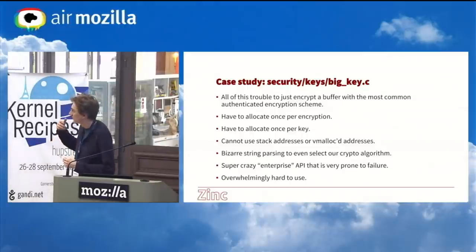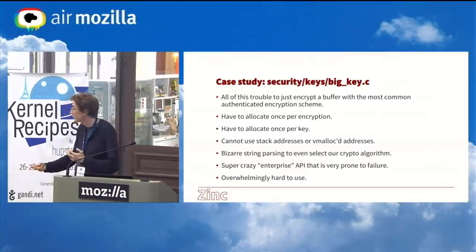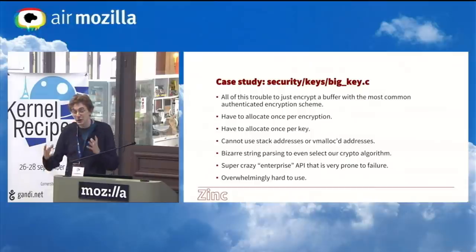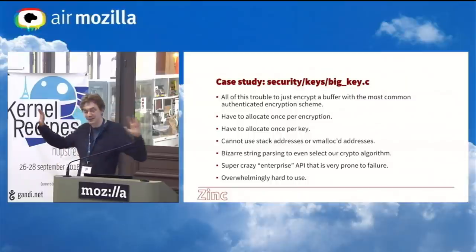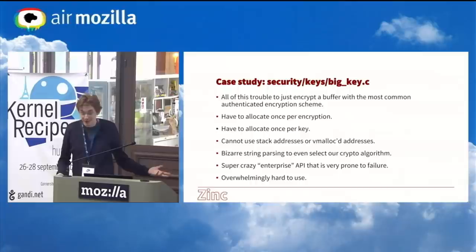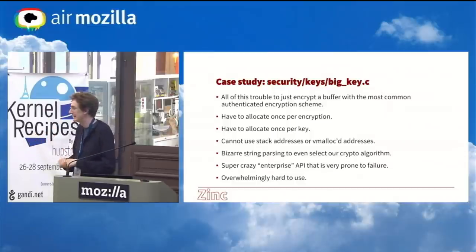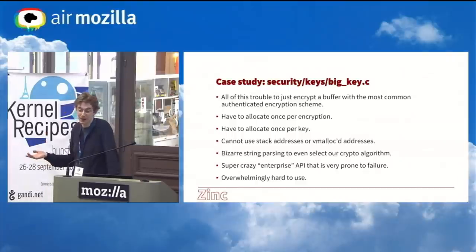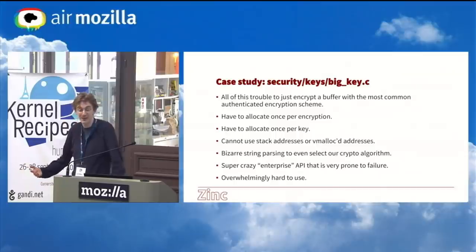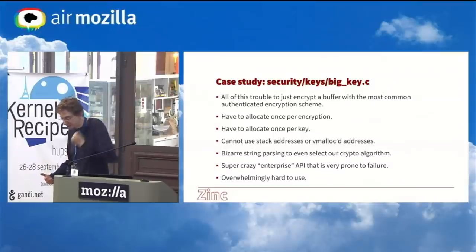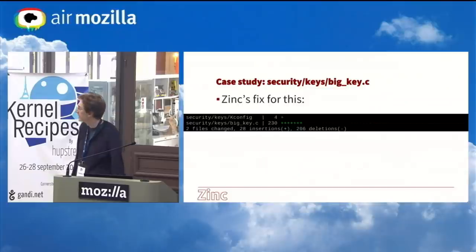Just to recap what's required with the current API: you have to allocate once per encryption, allocate once per key or take mutexes, you can't use stack addresses, you can't use vmalloc addresses, there's a bizarre string parsing situation, you even choose which algorithm you're going to have. The whole thing is this enterprise API, developed by smart people but not appealing to use. Importantly, it's hard to use, which means when people try and use it, oftentimes they get it wrong and there are bugs. With crypto, where people are already making bad choices about what crypto to use, you also want to avoid making problems with how to use it. When we replaced this in BigKey with Zinc, we removed 200 lines and added 28.